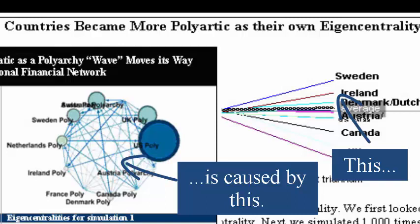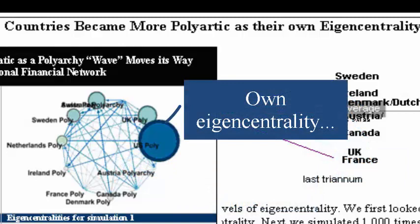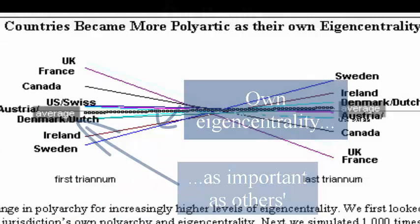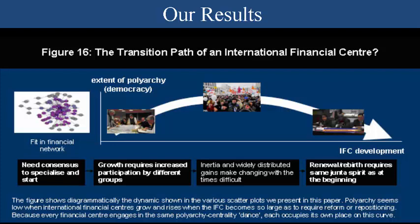and that this democracy or autocracy is changing in response to this overall configuration of eigencentrality in the international financial network — not only with this jurisdiction's own eigencentrality, but also with its trading partners' eigencentrality. Thus, as a result of these data, we see a clear transition path for a set of incentives in the international financial network. We do actually see some jurisdictions' polyarchy rising as a method of helping their financial centers become more competitive.